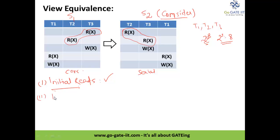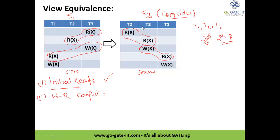The second condition is write-read conflict. If any schedule has a write-read conflict, the same write-read conflict in the same order should exist in S2 as well. You can notice that we have a WX→RX write-read conflict from T3 to T1 in S1, and here in S2 it is also from T3 to T1. So the second condition is also satisfied.